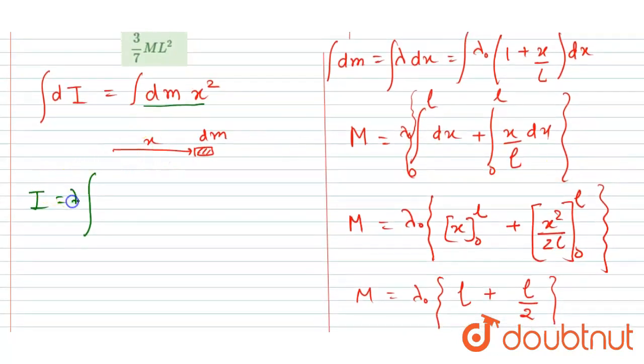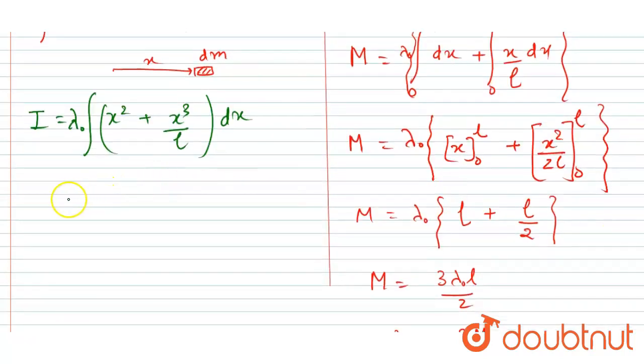So I will multiply DM with X square. Lambda naught is a constant times X square plus X cube by L, integrated with respect to DX. If we integrate this expression, you will get X cube by 3 plus X to the power 4 by 4L. So the limit will be from 0 to L.